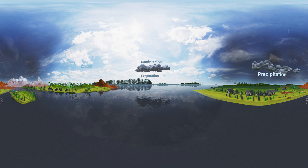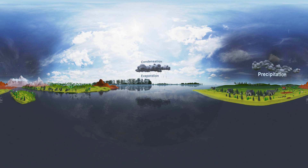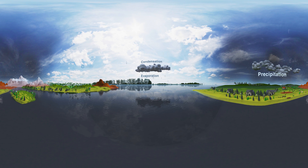Evaporation. The water in the water bodies like ponds, rivers and oceans evaporates into the atmosphere due to the heat of the sun. It is called evaporation.